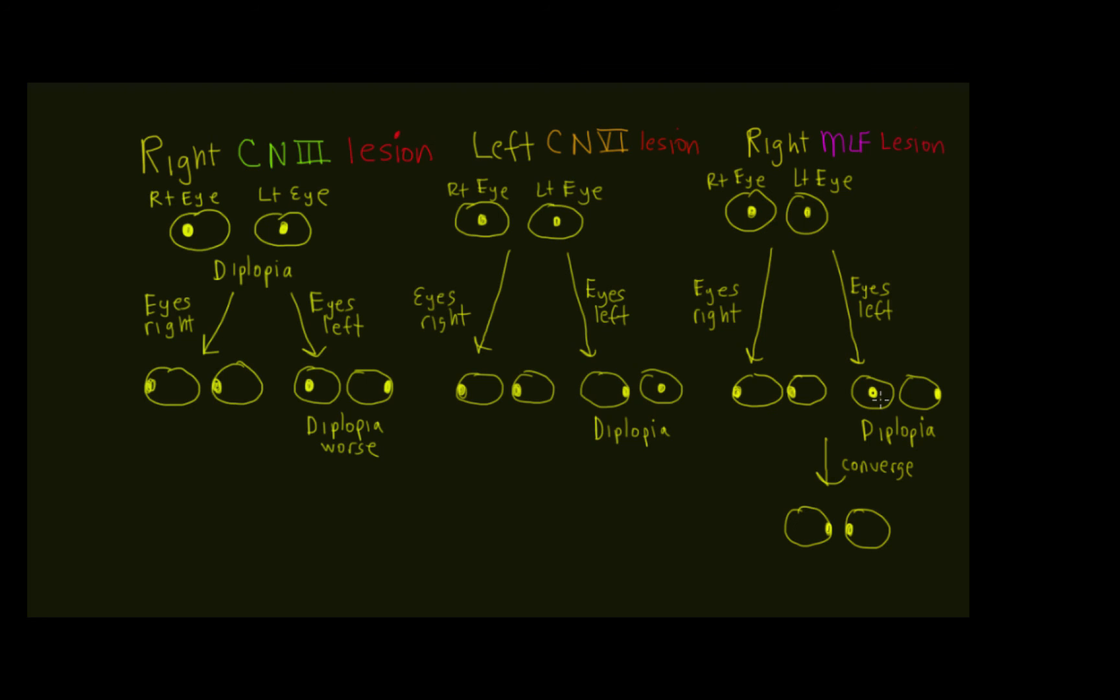And it's certainly important to know how the patient's eyes are moving when we're asking them to move their eyes left or right, so we can figure out what kind of double vision is going on. And that concludes this video on double vision caused by lesions of cranial nerve three, six, and the MLF.